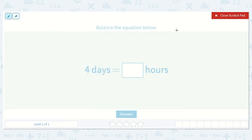Well I know if one day has 24 hours, four days would have 24 times four because we would need to do 24 four times. So four times four is 16, four times two is eight plus our one more is nine. So four days is equal to 96 hours.